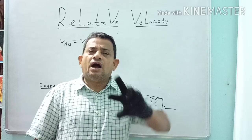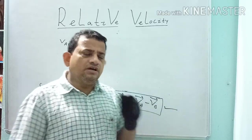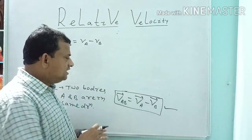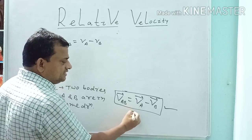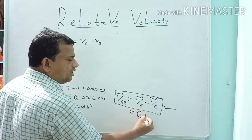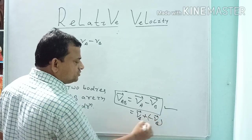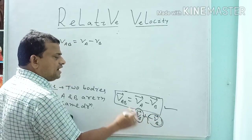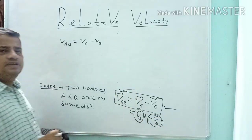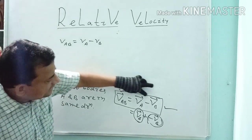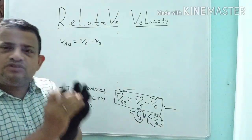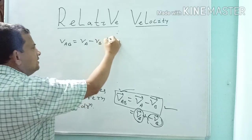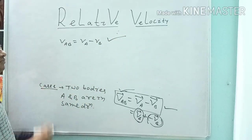VA is one vector, minus VB is another vector. When they are added, this gives the final result. When the vector signs are eliminated because A and B are in the same direction, that is why you get VAB = VA − VB. So for Case 1, this is the formula.